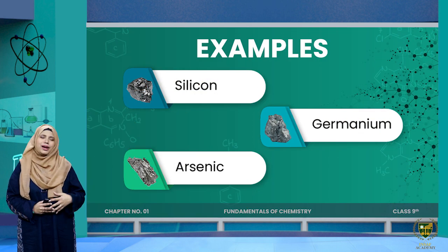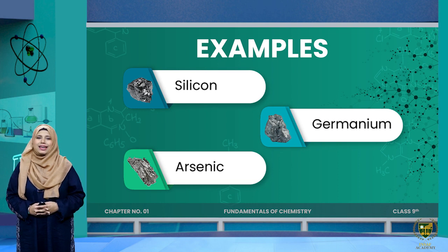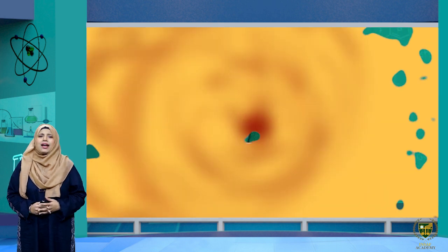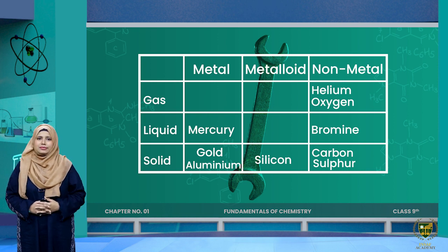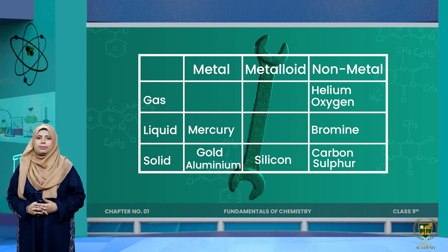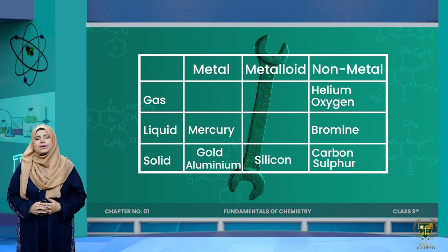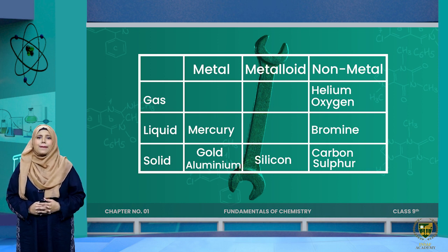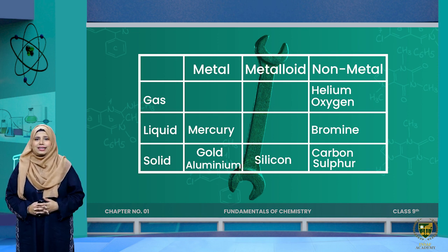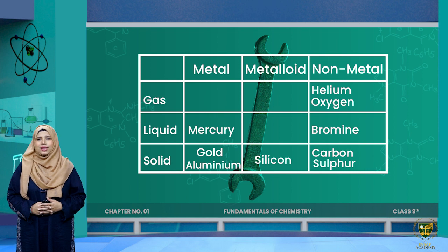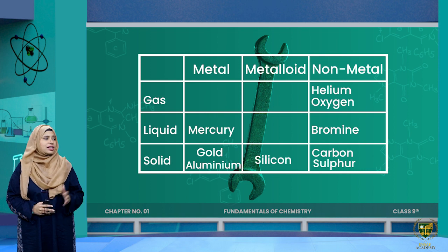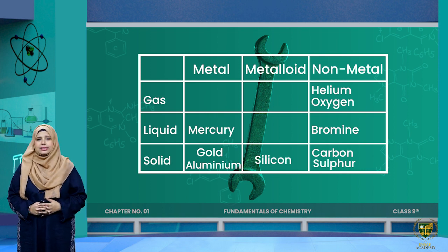Metalloids are moderate conductors of heat — not good conductors but not very bad either, just moderate. Examples of metalloids are silicon, germanium, and arsenic. Looking at the classification table, you can find examples for solid, liquid, and gas states of elements, and for metals, metalloids, and non-metals. Metals usually exist as solids but mercury is a liquid metal, while metalloids exist in solid form.